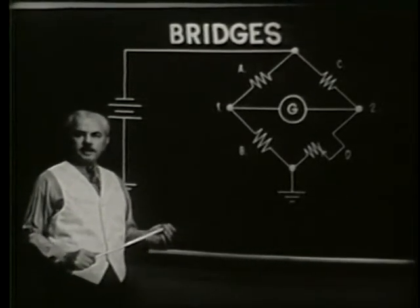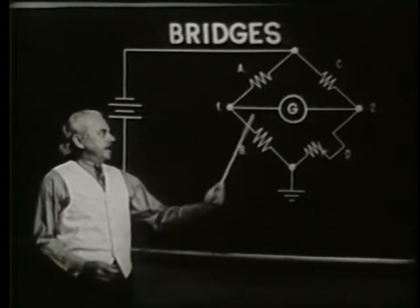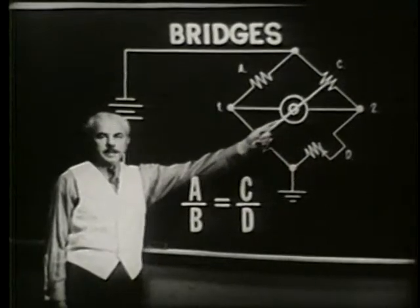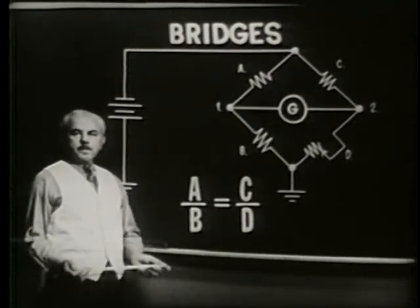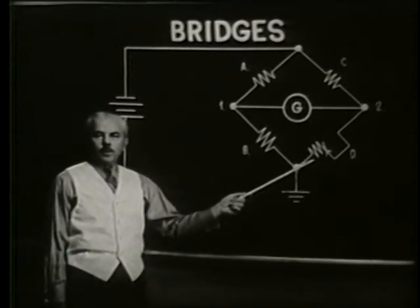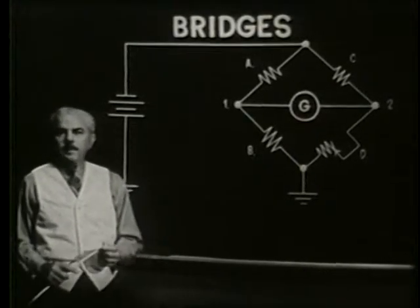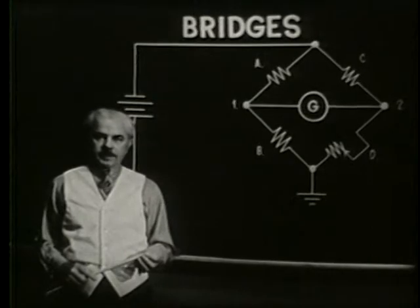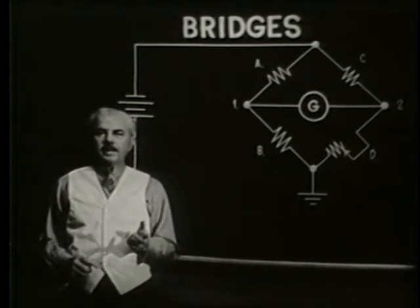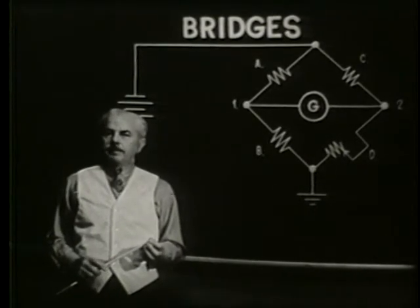Here are some very important points to remember about the bridge circuit. It is widely used for both precision measurements and control devices. When balanced, points 1 and 2 are at the same potential and the detector has zero current. Also in a balanced condition, A over B is equal to C over D, and this ratio is true for both voltage and resistance. When out of balance, one variable resistor can control both the direction and the quantity of current through the detector. So far you have studied series circuits and parallel circuits. In your next lesson you will study series-parallel circuits — a combination of series and parallel arrangements in the same circuit. A review of both series and parallel circuits is highly recommended before your next lesson.